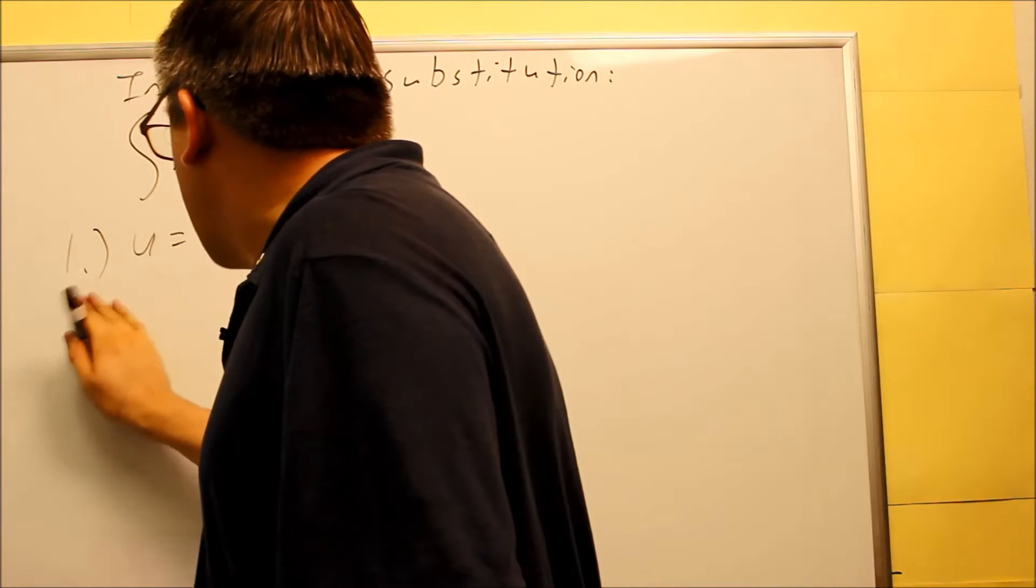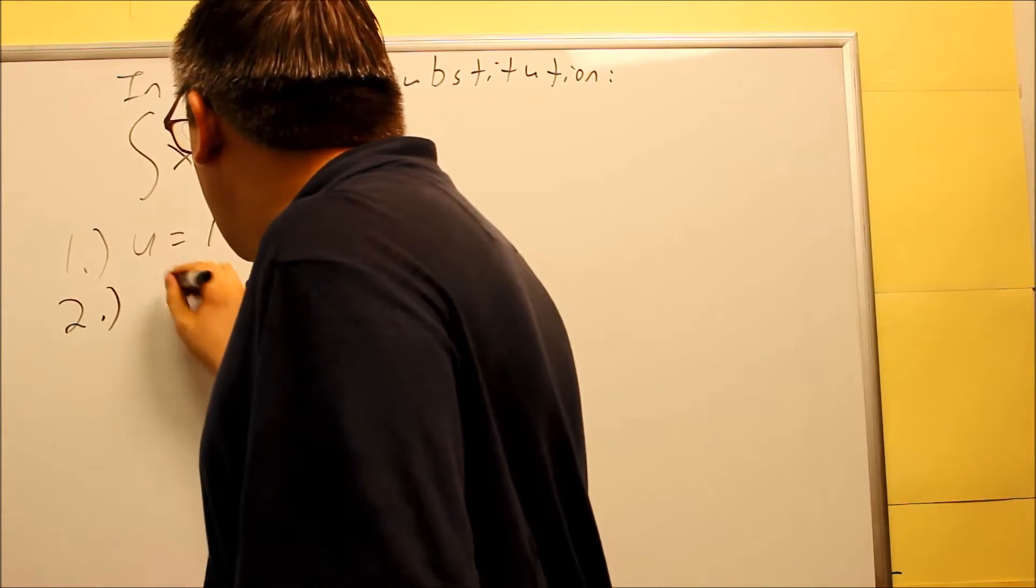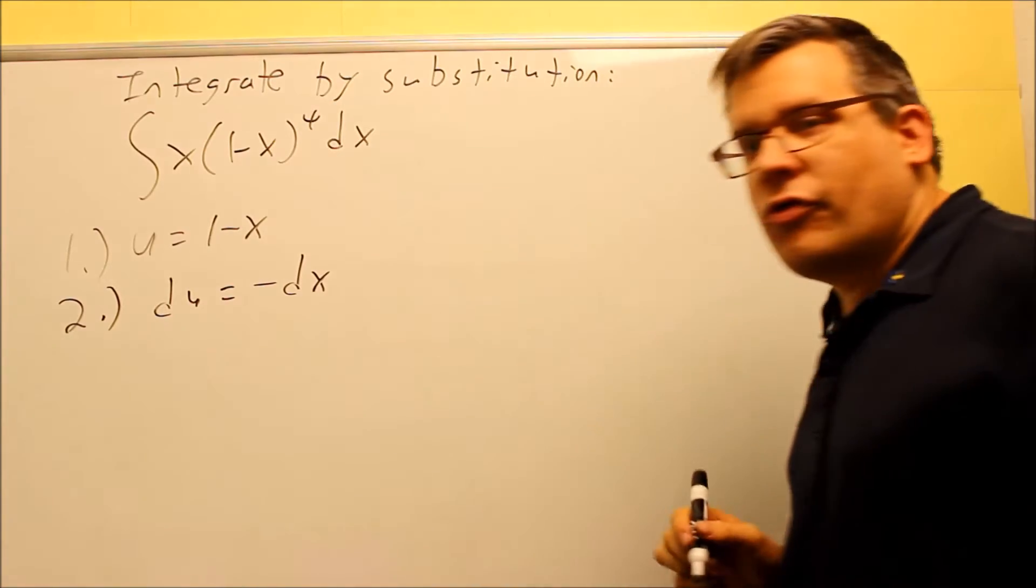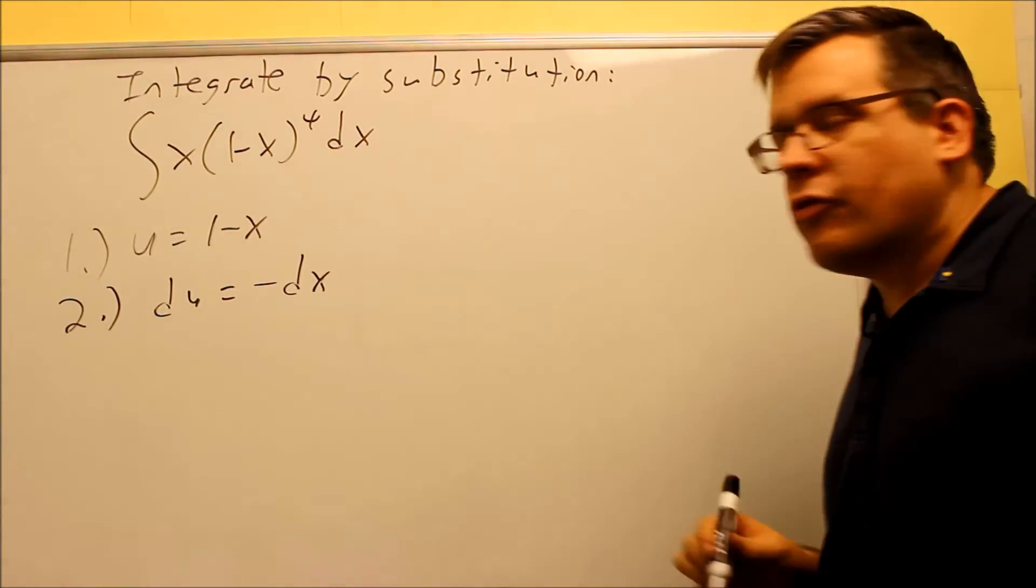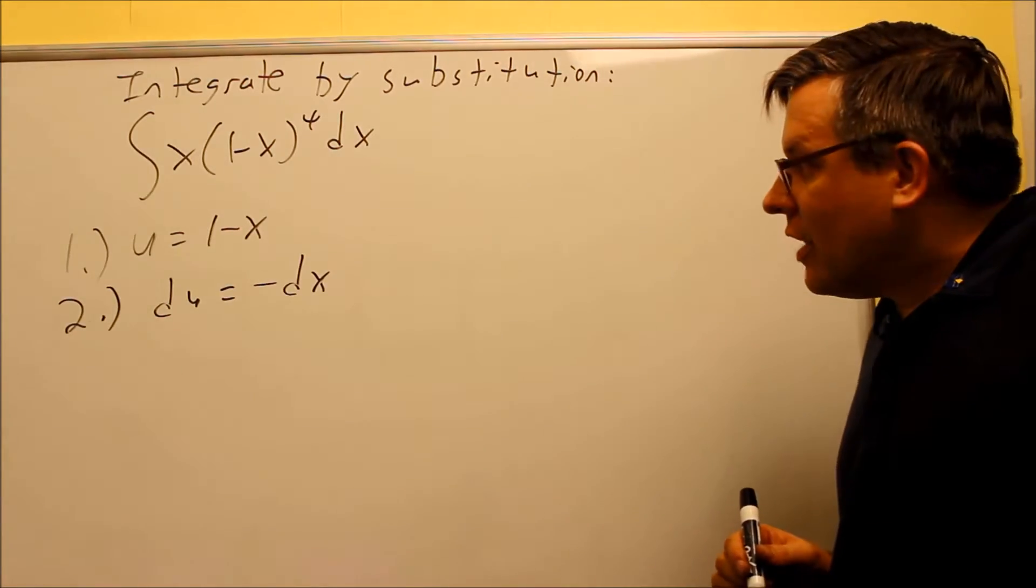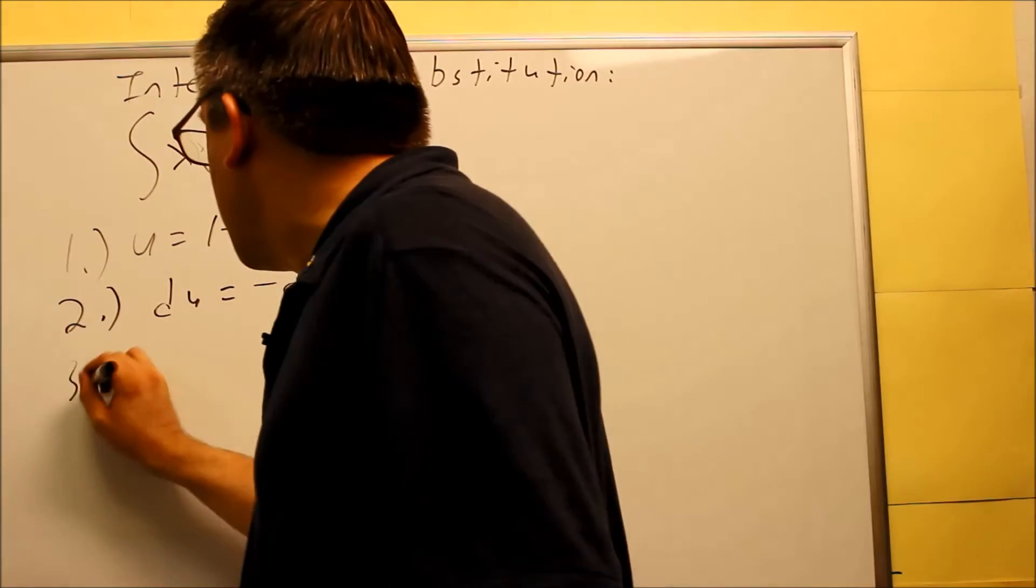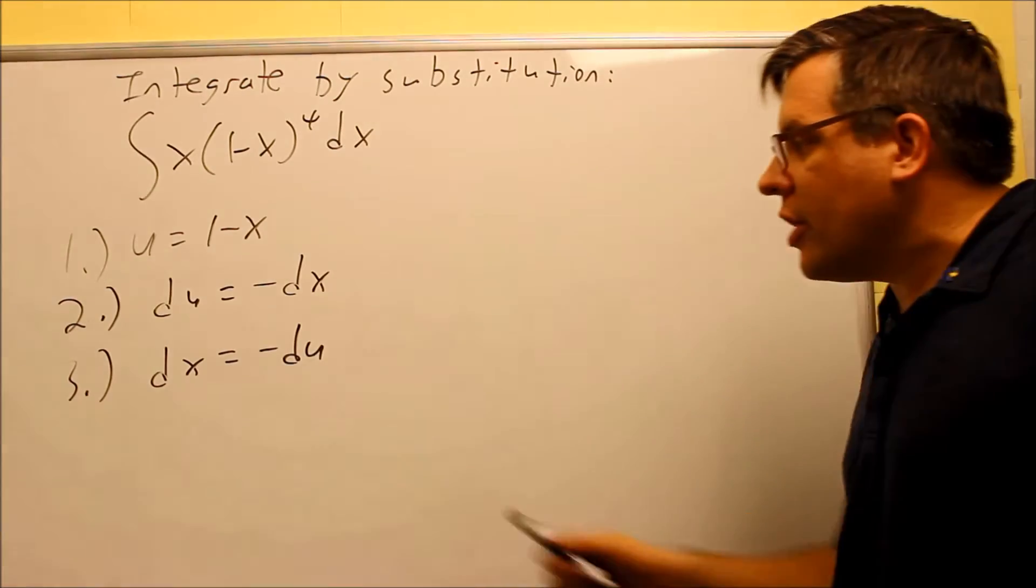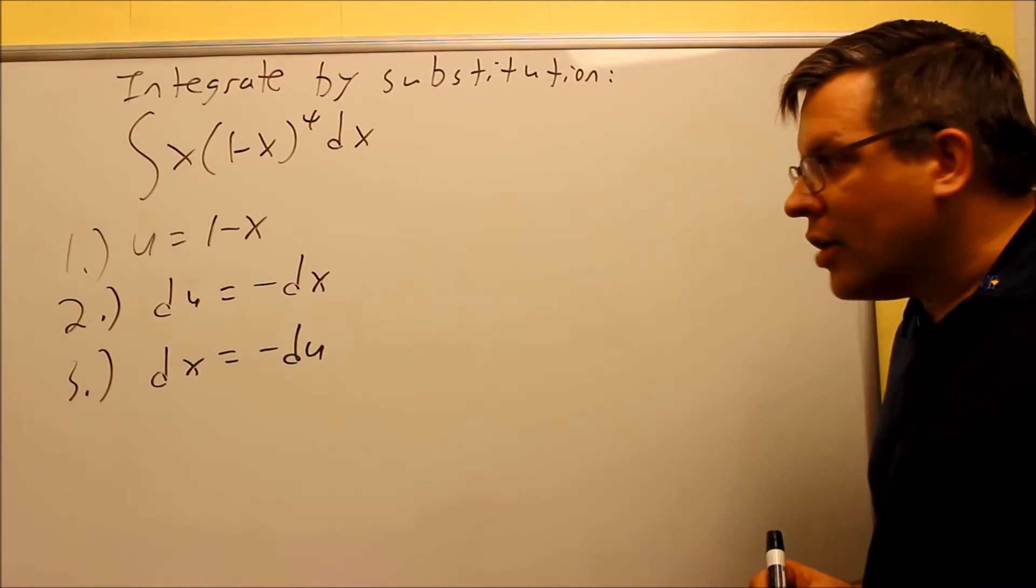And then we're going to take the derivative of both sides. So we do DU is equal to, in this case we're going to get a negative DX there, that's the derivative of 1 minus X. And then, if you solve for DX here, your DX is just, you can apply the negative on the other side now, so your DX is equal to negative DU.